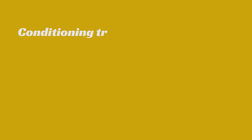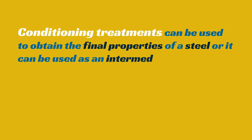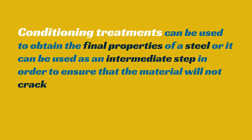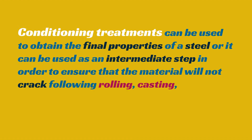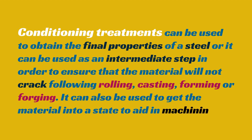Conditioning treatments can be used to obtain the final properties of a steel, or they can be used as an intermediate step in order to ensure that the material will not crack following rolling, casting, forming, or forging. It can also be used to get the material into a state to aid in machining.